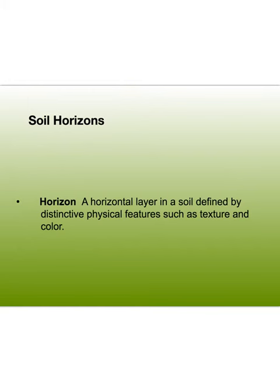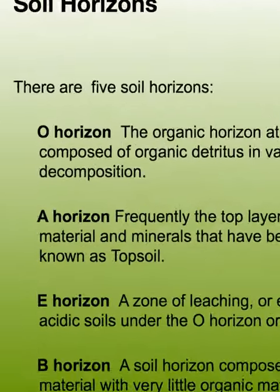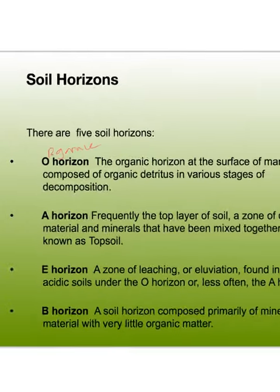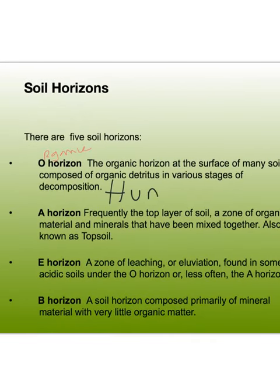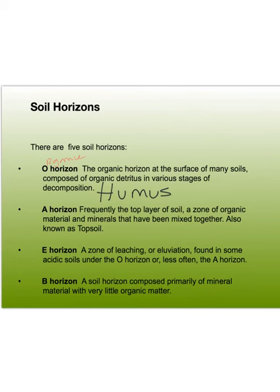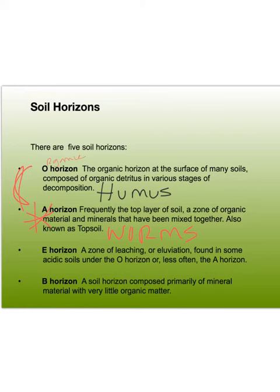Now we're getting into horizons — distinct physical layers of separation you can differentiate by texture and color. The O-horizon: O stands for organic, because the humus is there. That detritus material is your humus. The A-horizon is where your topsoil is — make sure you star this because people get confused even though it's underneath the O layer. The A-horizon has your topsoil and is great for farming. These two are mixed together by worms and other animals that burrow.